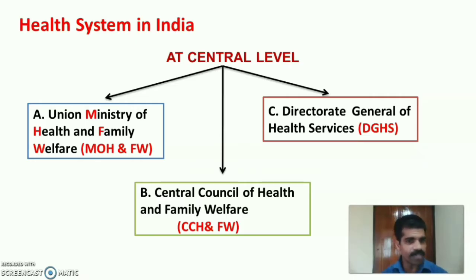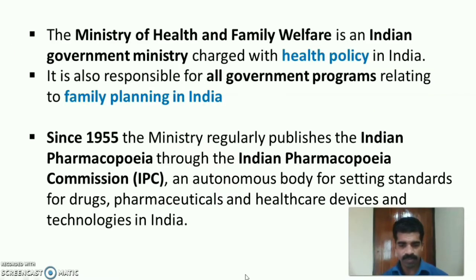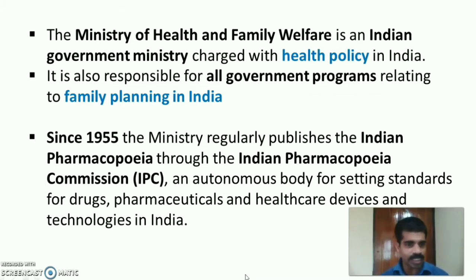The three central-level organizations are: the Union Ministry of Health and Family Welfare, the Central Council of Health and Family Welfare, and the Directorate General of Health Services. The Ministry of Health and Family Welfare is an Indian government ministry charged with health policy in India, and is also responsible for all government programs relating to family planning. Since 1955, it regularly publishes the Indian Pharmacopoeia through the Indian Pharmacopoeia Commission (IPC).